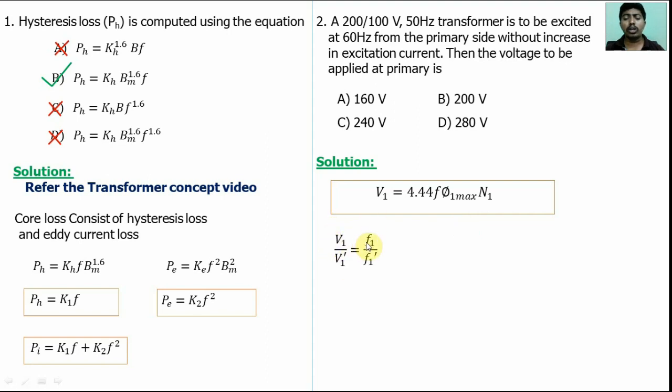So we may write this equation: V1/V1' = F1/F1'. Because for the same transformer, core dimensions are the same, number of turns are the same - this is constant. This will be a constant, so we will get this equation.